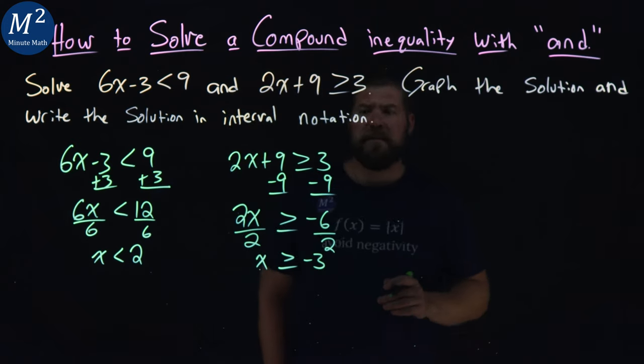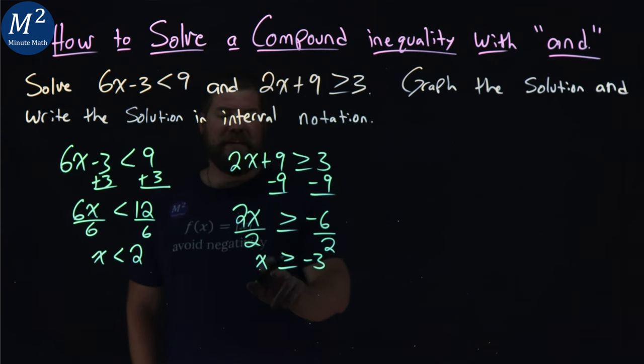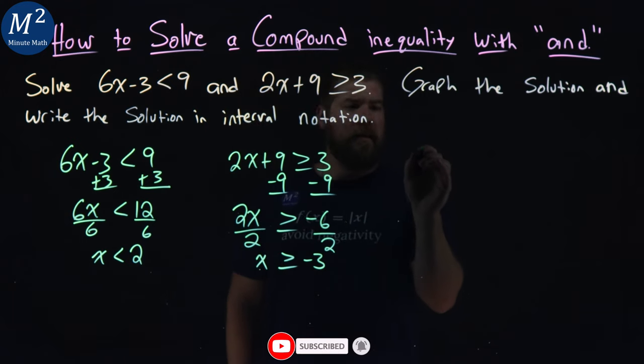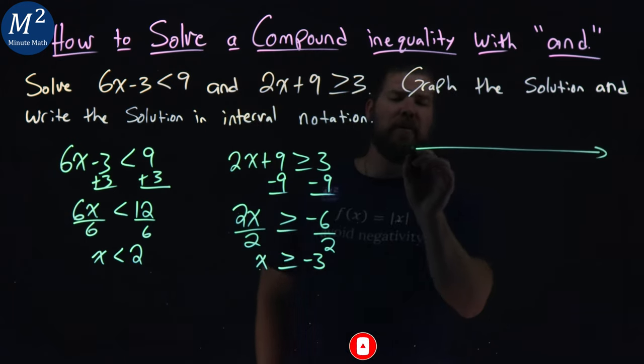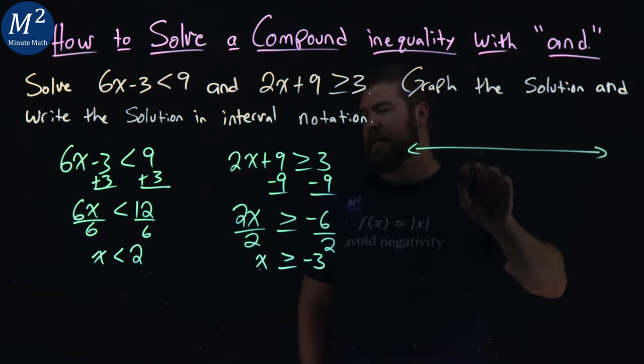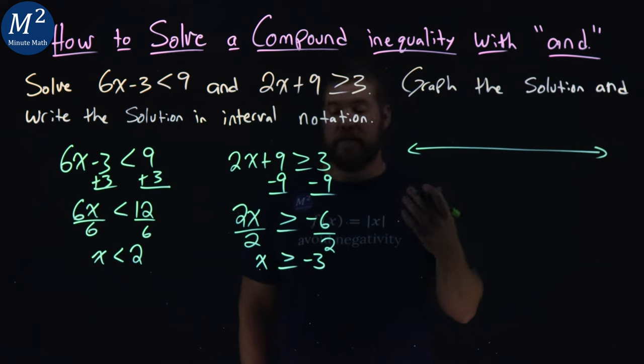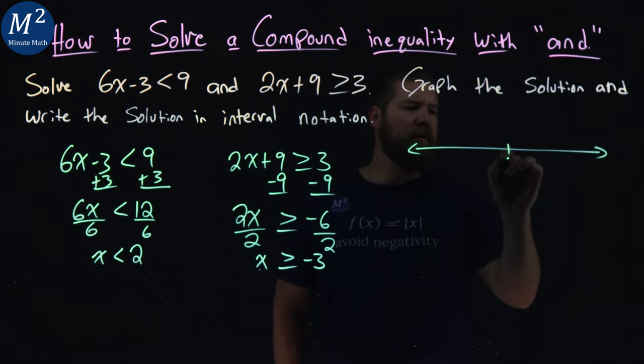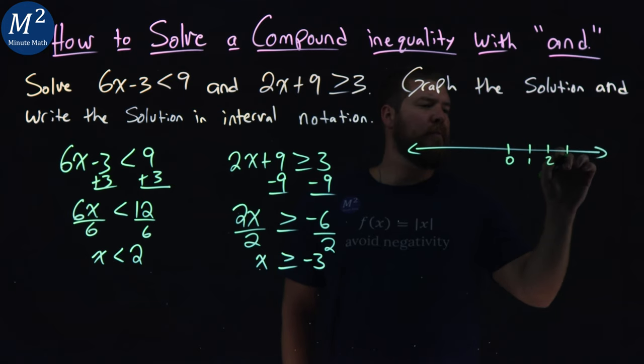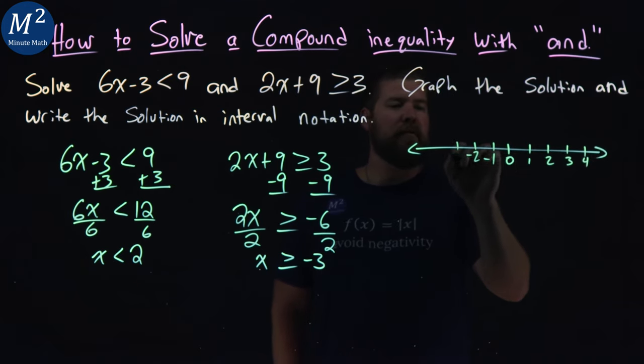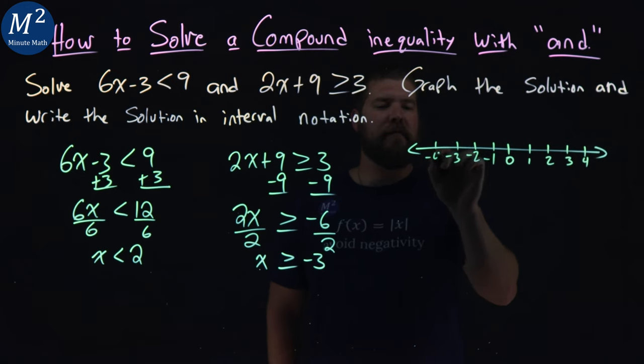So now what I'm going to do is graph each one of these individually and see where they line up. I'm going to take a number line. You can draw two different number lines, but I like to put my inequalities above and below the graph. Let's start with 0 here in the middle: 1, 2, 3, 4, negative 1, negative 2, negative 3, and negative 4.